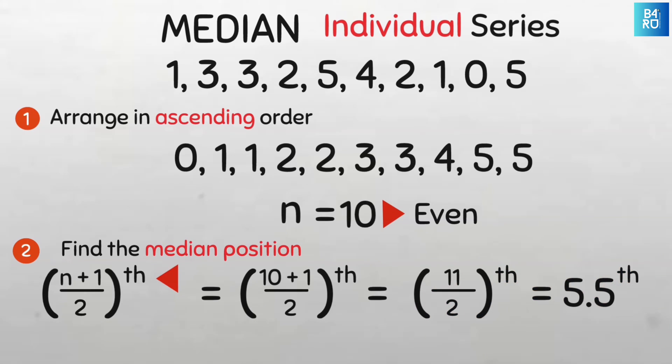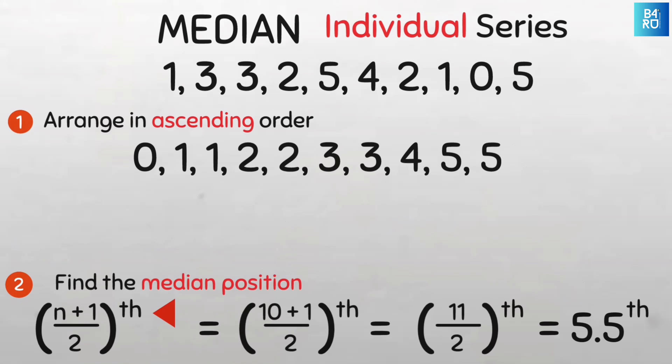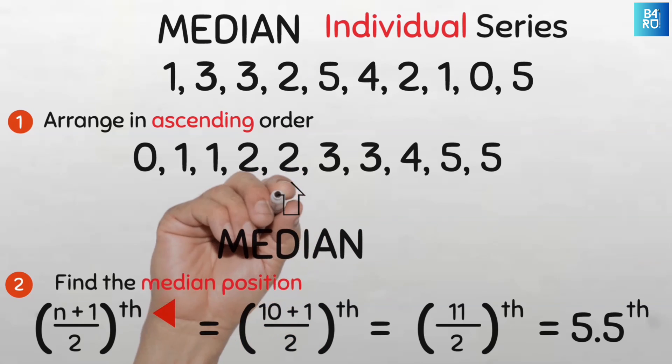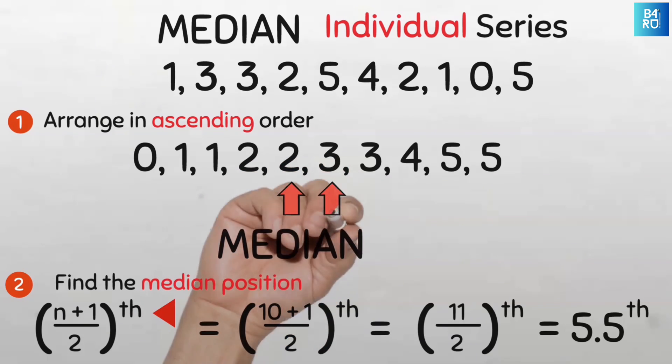Well guess what, there is no 5.5 position, so we'll have to find the average of the values at the fifth as well as the sixth position. So let's count: 1, 2, 3, 4, 5. So our fifth value is 2 and our sixth value is 3.